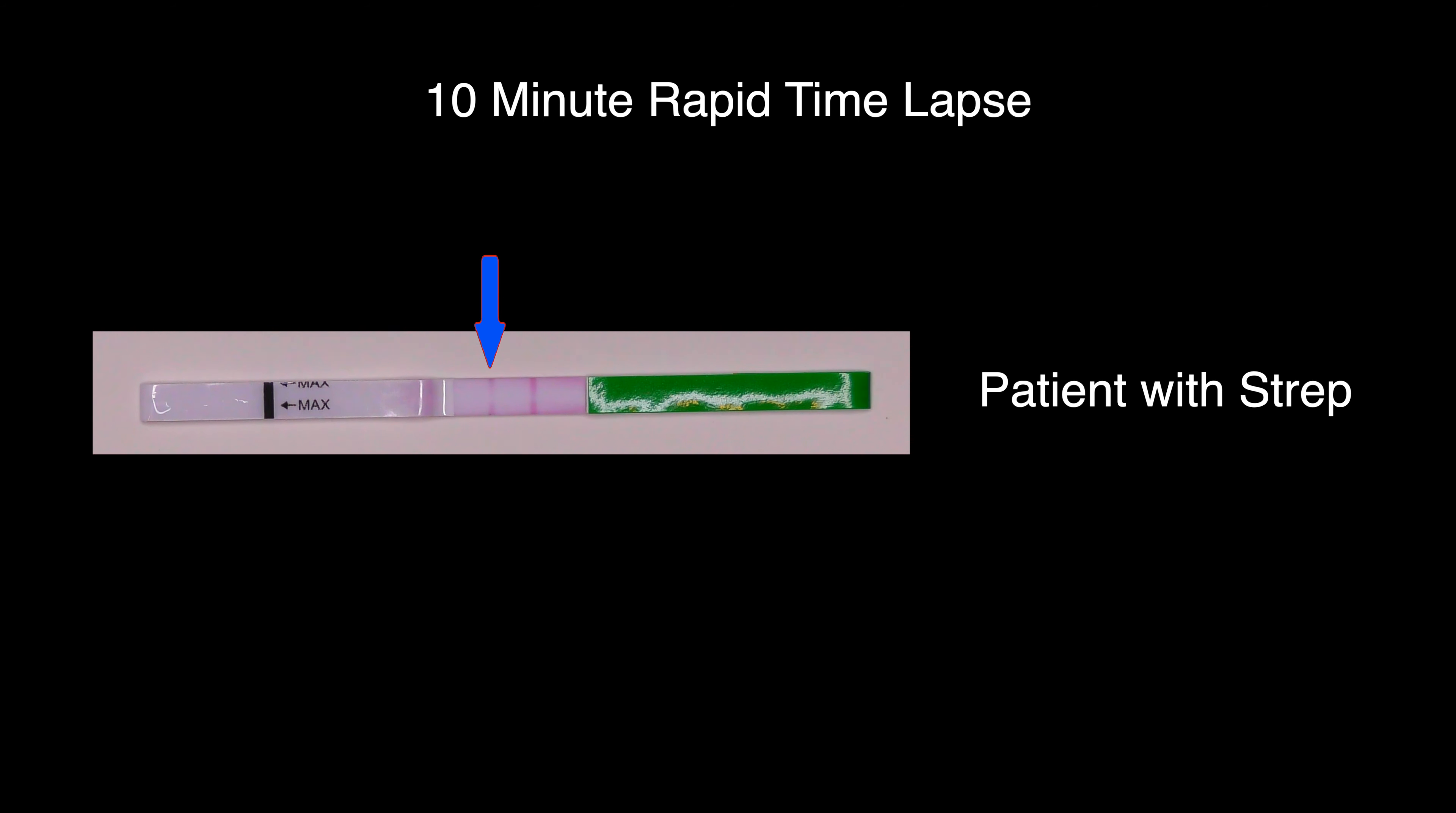The blue arrow points to a second band that should appear if strep is present. As such, if two bands are present, the patient has strep and should be treated accordingly.